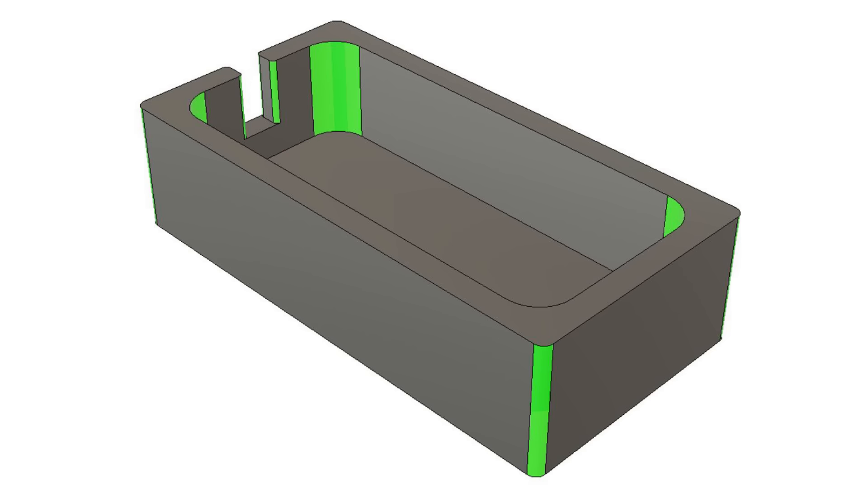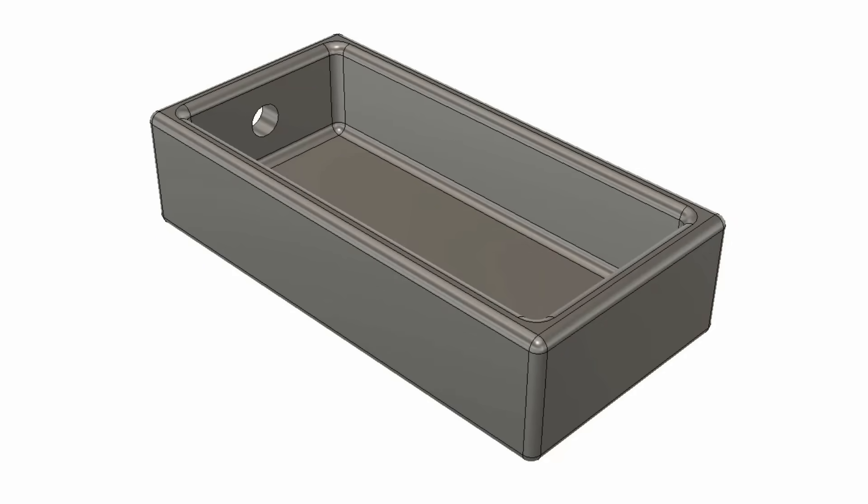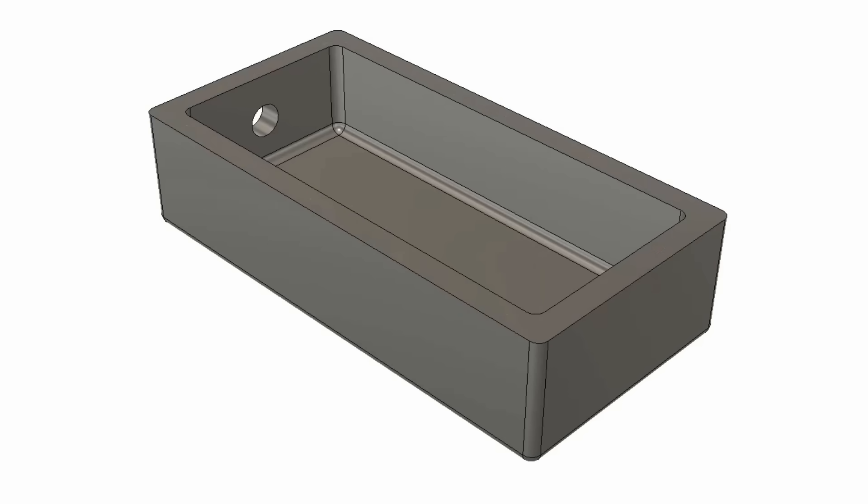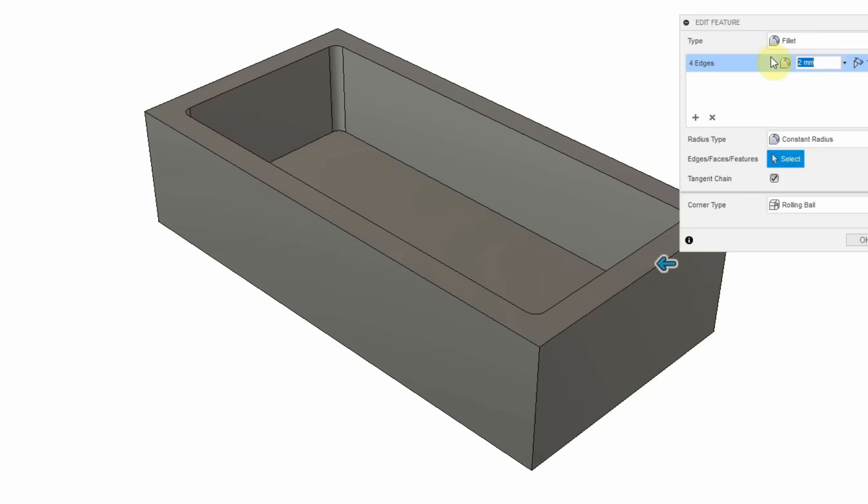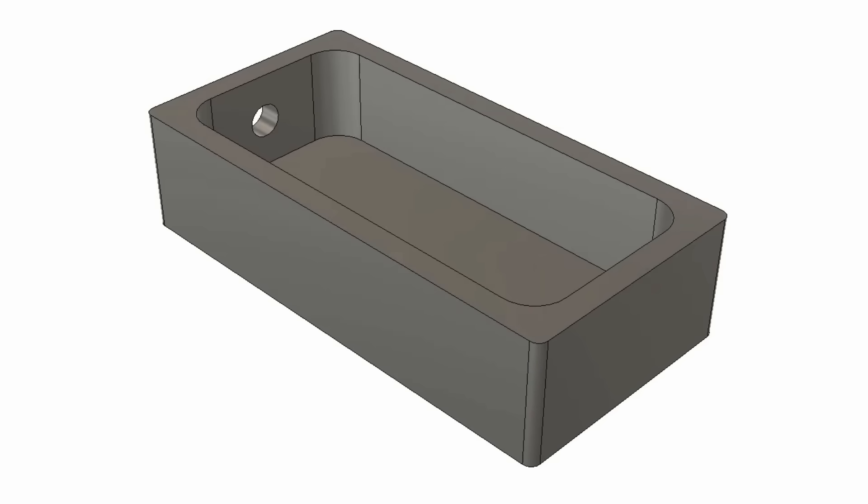A few small changes can make a huge difference. First, remove all edge breaks drawn as fillets. Next, remove all floor fillets. Next, increase the internal fillet diameter. Finally, reduce setups if possible. In this case, turning a hole into a slot that can be machined in the first setup.